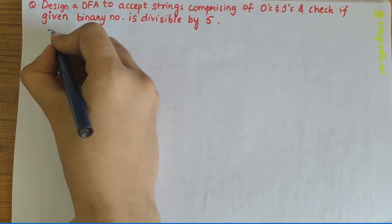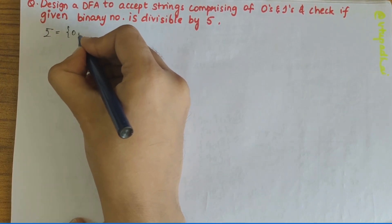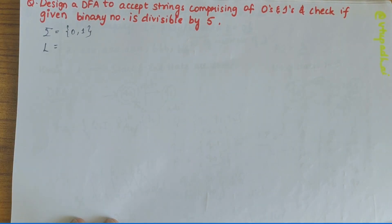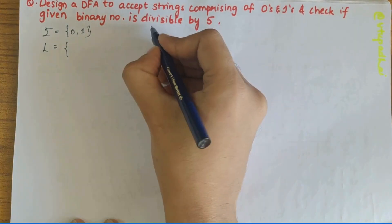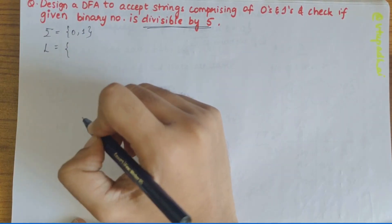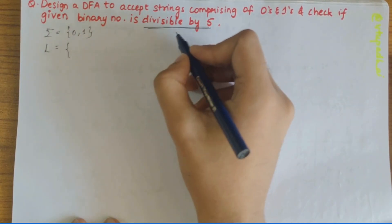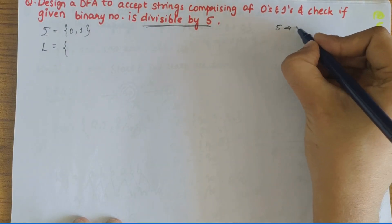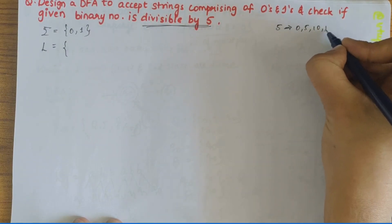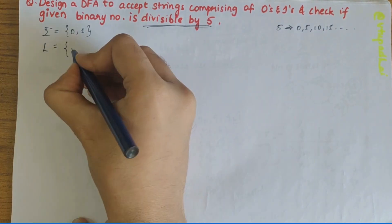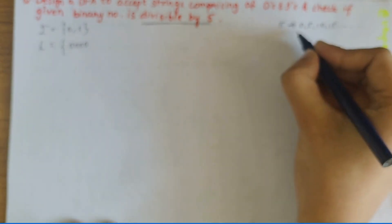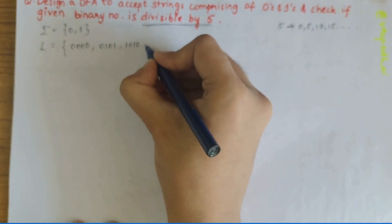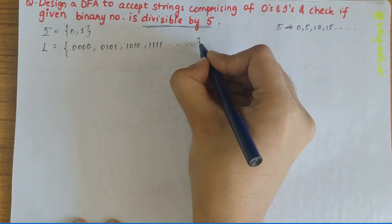First, let's write the characters to be included — that is 0 and 1 for sigma. Then we have to define the language set. The binary numbers should be divisible by 5, so that means 0, 5, 10, 15 and so on. Let's write the binary equivalents of all these: 0, 0101, 1010, 1111, and so on.